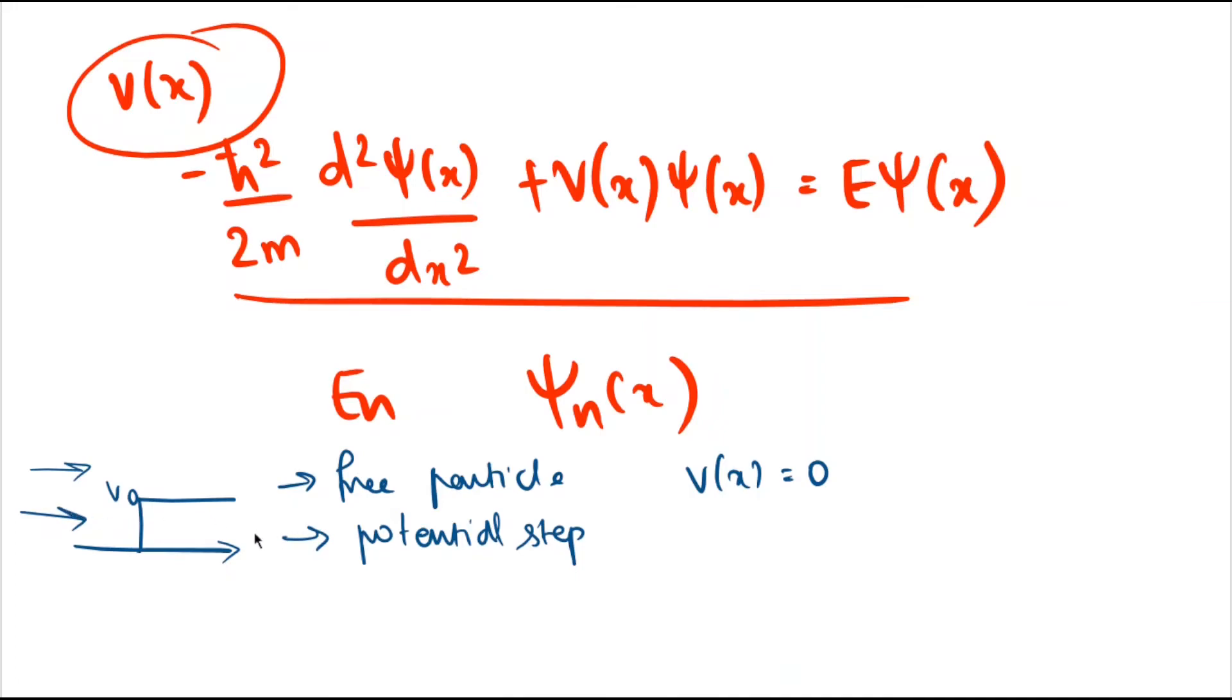Or if the energy is less than V0, still the particle has a finite probability of passing the potential step. Third one is the finite and infinite potential well.